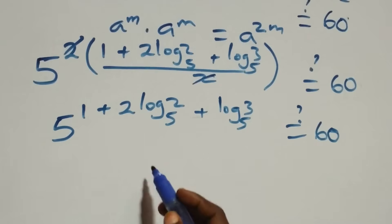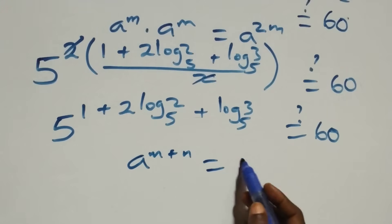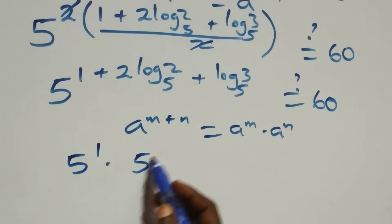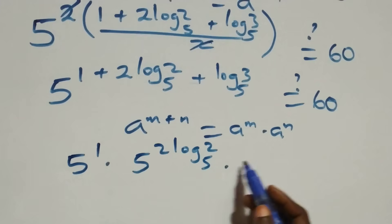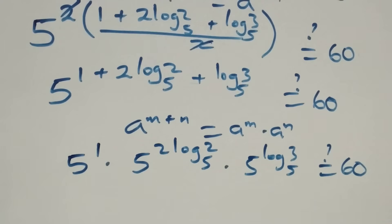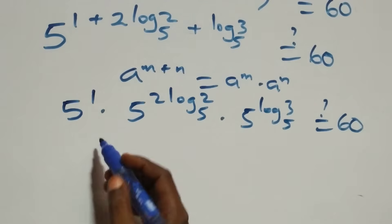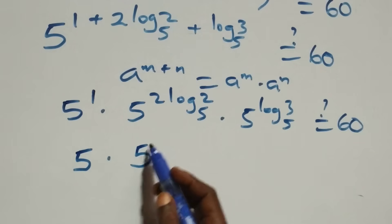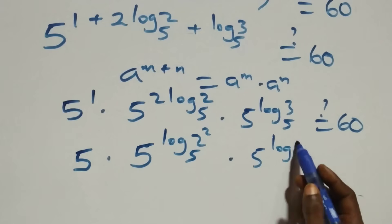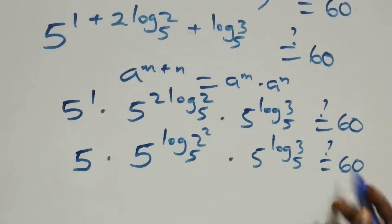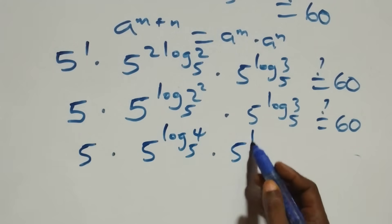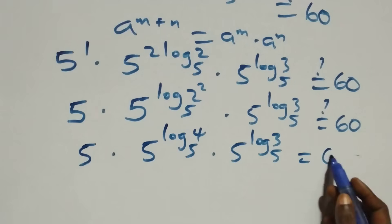We apply the law of indices: a raised to power (m plus n) is the same thing as a raised to power m times a raised to power n. So this becomes 5 raised to power 1, times 5 raised to power 2·log₅2, times 5 raised to power log₅3, equals 60. Applying the power rule, 5 raised to power 2·log₅2 equals 5 raised to power log₅(2²) = 5 raised to power log₅4.